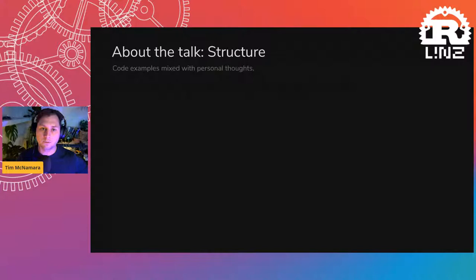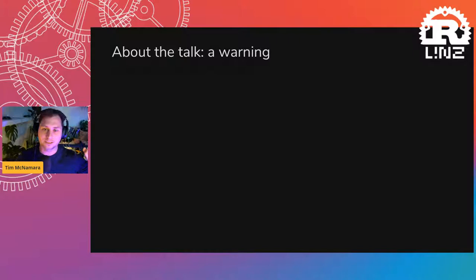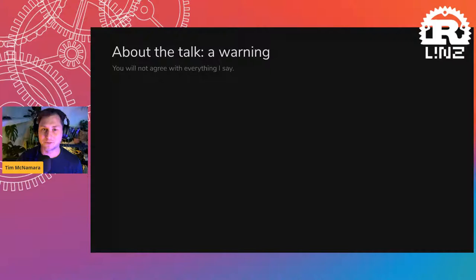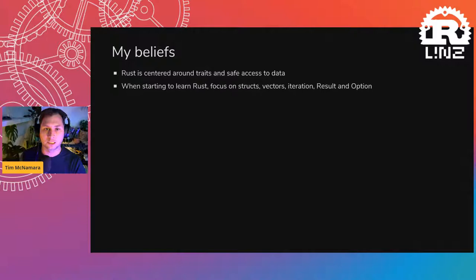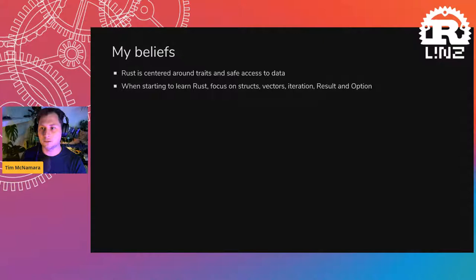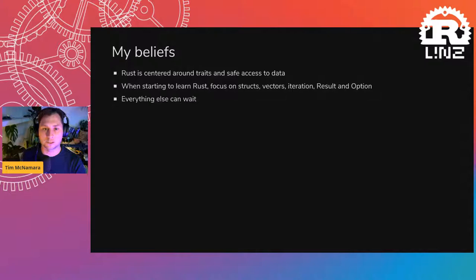My belief is that Rust is centered around two main things: the notion of a trait, and safe access to data. If you can understand those two concepts, you'll understand the majority of Rust. I would focus on structs, vectors, iteration — how to process data within a vector — and result and option. Those types are how we express errors or missing values in Rust. If you can focus on that core of the language, that will provide the foundation to learn the rest. Everything else can wait.